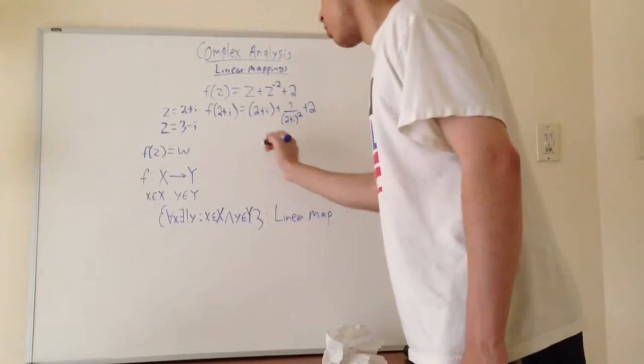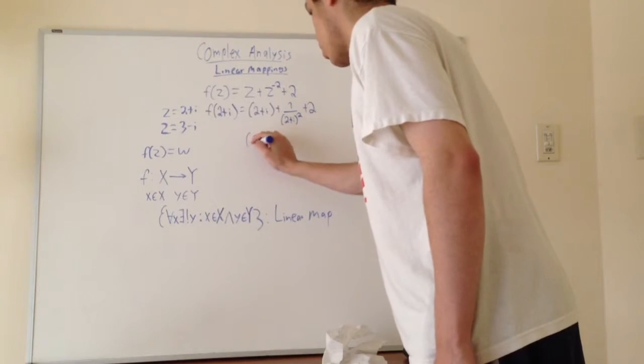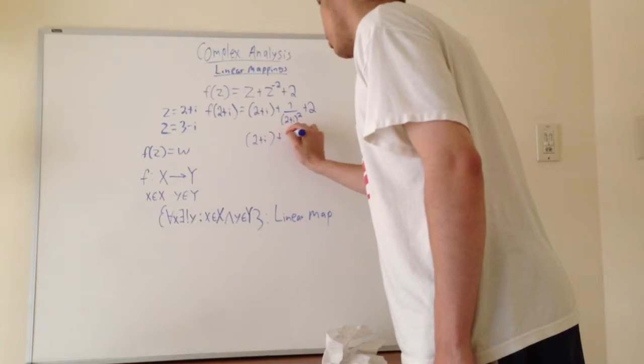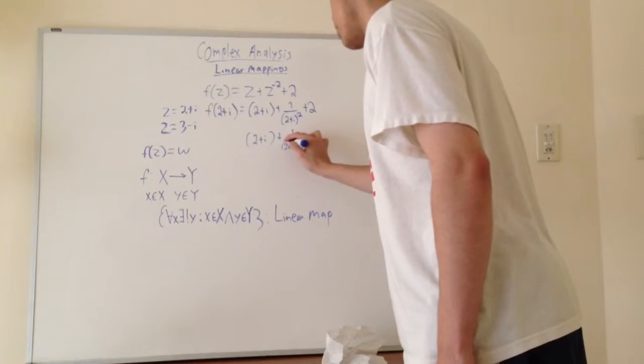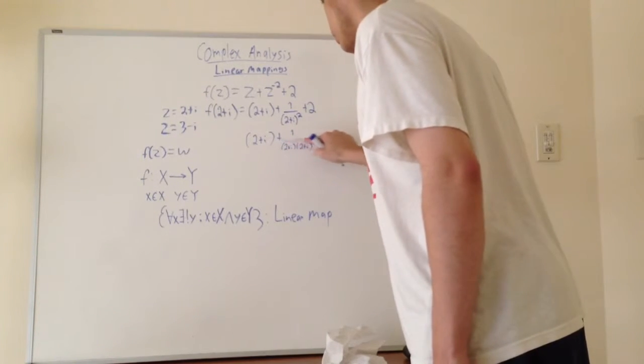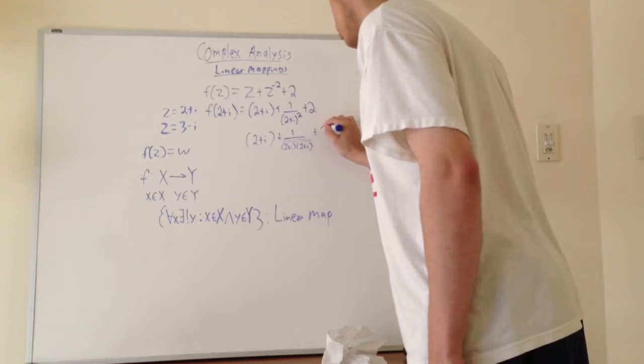And so now we're just going to go ahead and expand this out. We're going to have 2 plus i plus, and here we're going to have 2 plus i times 2 plus i. I'm just going to go ahead and write everything out because this is the first video. And then plus 2.